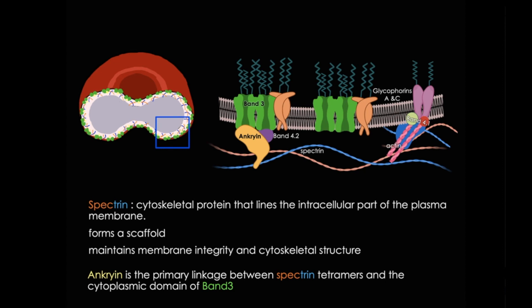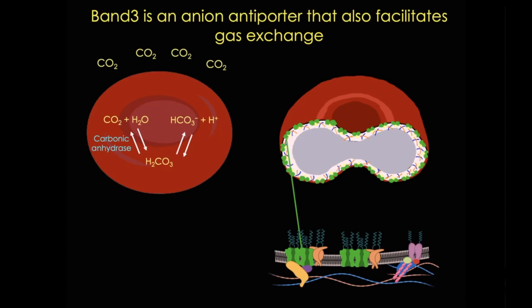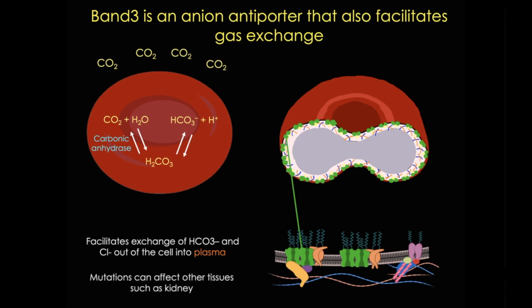I'd like to take a quick step aside and talk a little more about band 3. This protein, in addition to providing stability, functions as an anion antiporter and it facilitates the exchange of bicarbonate ion and chloride out of the cell into the plasma. Mutations in this protein can have effects on gas exchange in red blood cells, but importantly they also have effects on ion transport in other tissues such as the kidney.